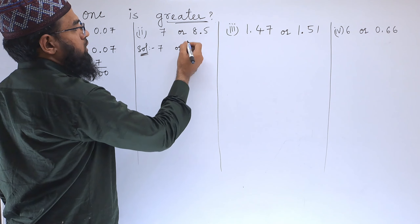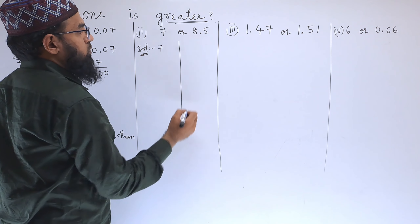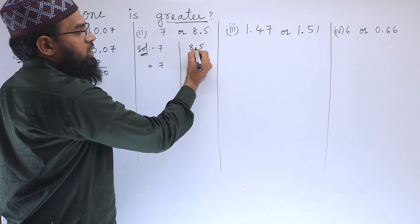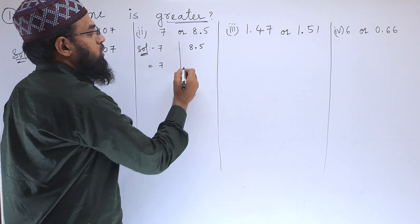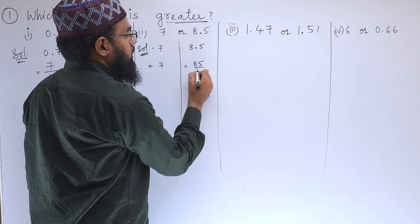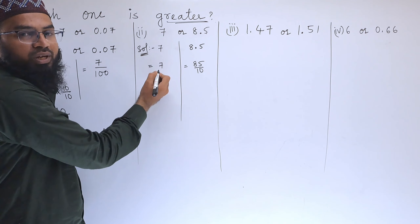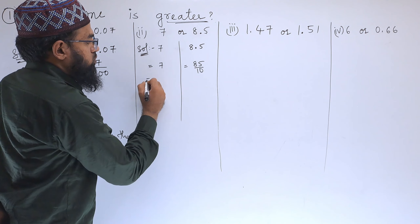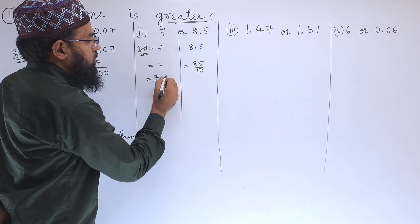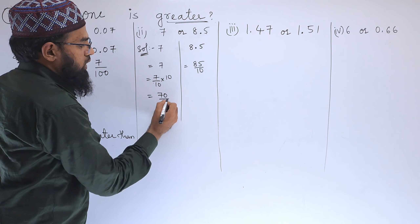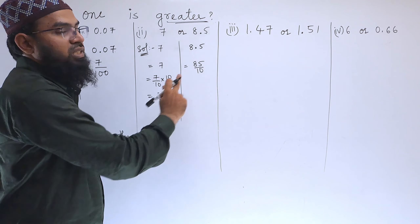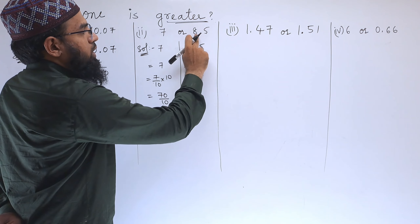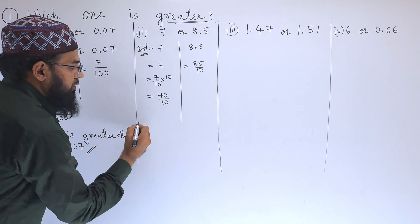Next: which is greater, 7 or 8.5? For 8.5, since there is a single digit after decimal, we can write 85 by 10. For 7, there is no decimal so we multiply numerator and denominator by 10 to get 70 by 10. Now the denominators are equal and 70 is smaller than 85, so 8.5 is greater than 7.